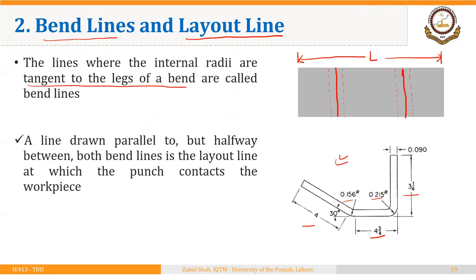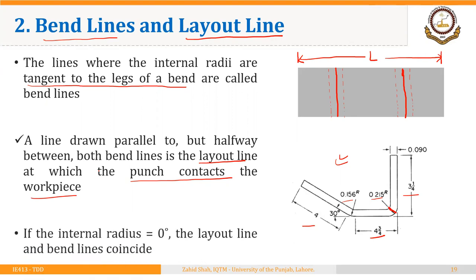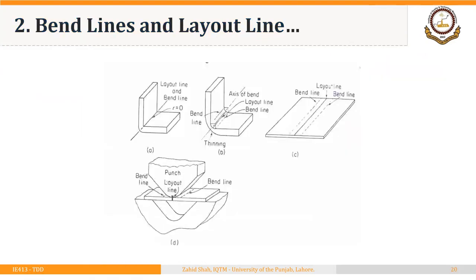The lines where the internal radii are tangent to the legs of a bend are called bend lines. In this case we will have a layout line somewhere over here when the blank was straight, and we will have two corresponding bend lines. A line drawn parallel to but halfway between both bend lines is the layout line at which the punch contacts the workpiece. If the internal radius is zero, the layout line and bend lines will coincide.